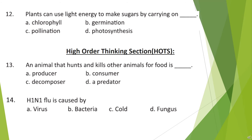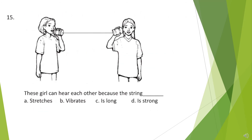Now let's start with the high order thinking section. Question 13: An animal that hunts and kills other animals for food is? Look at the options and choose your answer. Question 14: H1N1 flu is caused by? Question 15: These girls can hear each other because the string? Look at the options and choose your answer.